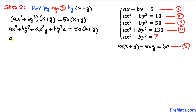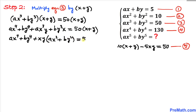We simplify: ax⁴ + by⁴, and from the remaining two terms we factor out xy, leaving ax² + by² inside the parenthesis, equals 50(x + y). Now ax⁴ + by⁴ equals 130, so we replace that with 130. And ax² + by² equals 10, so we replace that with 10 as well.